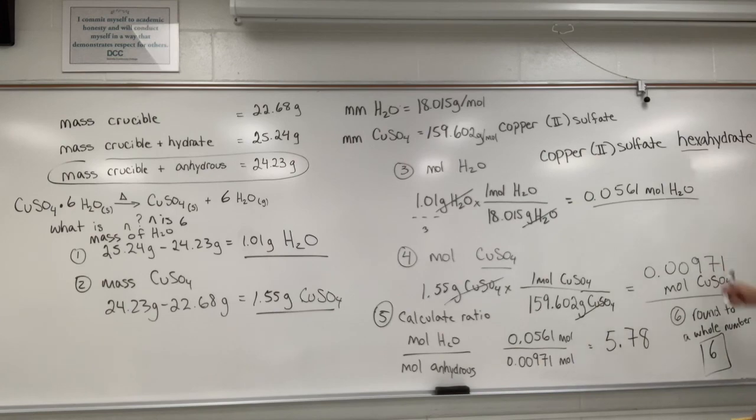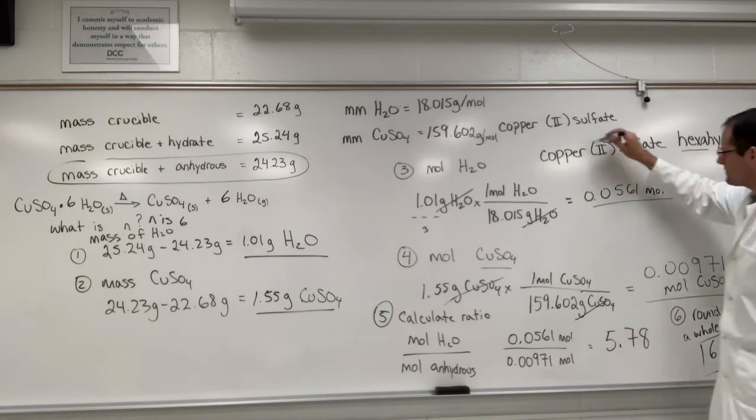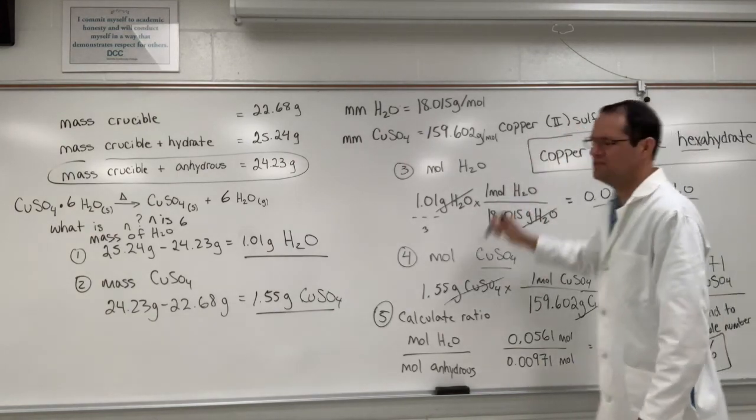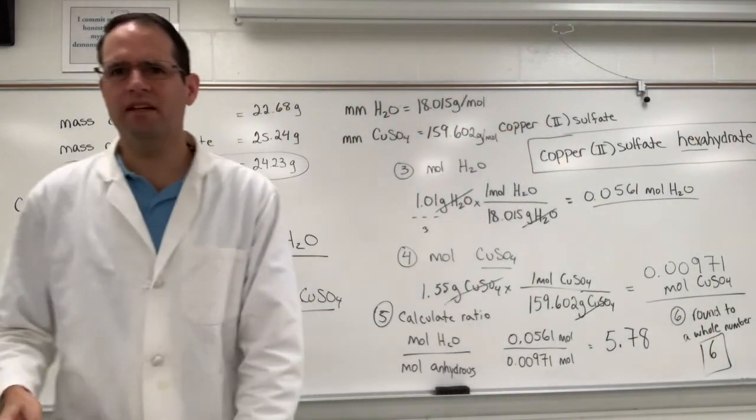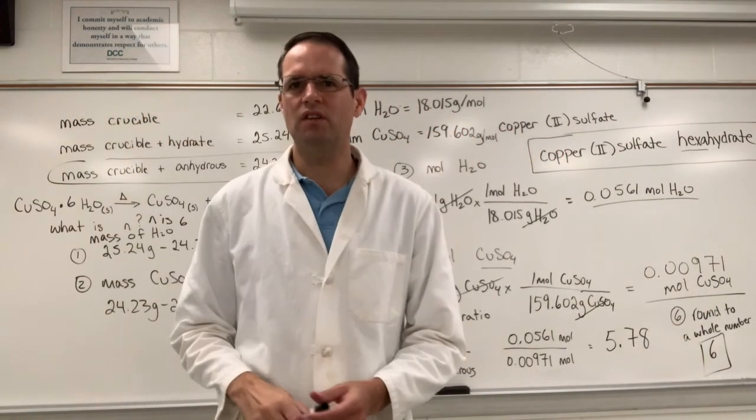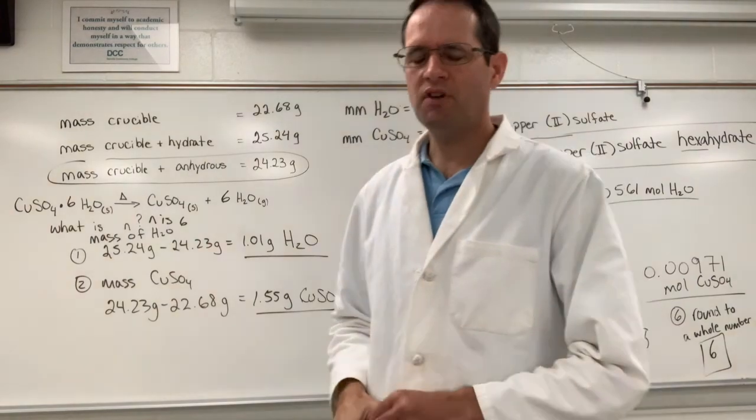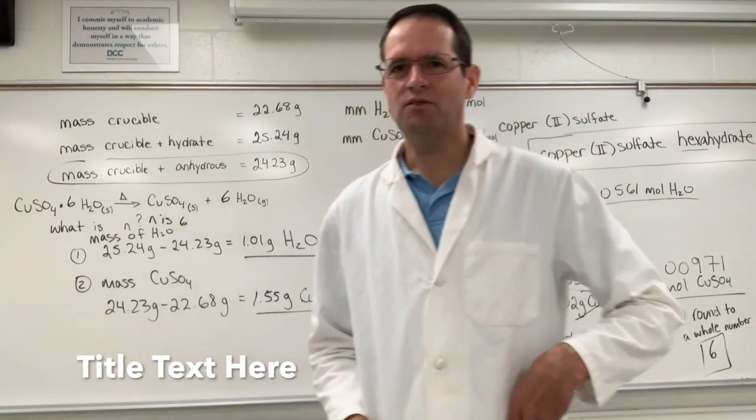So the name of the substance would be copper 2 sulfate hexahydrate. Hexa means six. And so I don't have anything else to discuss. That's the steps, and I hope you like this video. Please consider subscribing if you like to see this content, and thanks for watching.